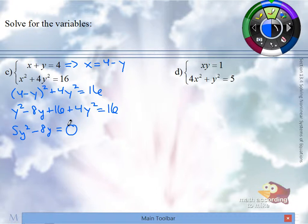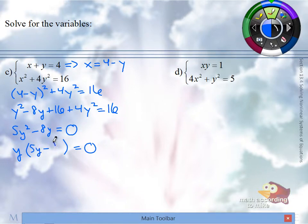This is a quadratic equation. What's the first way that you learn to solve a quadratic equation? Factor. What's the GCF? Y. If we factor out a Y, we're left with 5Y minus 8. You have a product that equals 0, which means each term of that product equals 0.